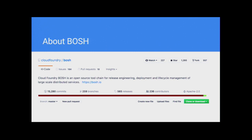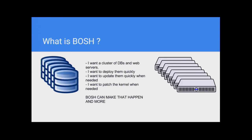There are 15,000 commits and counting on GitHub. Imagine the basic example: I have a cluster of databases and a cluster of web servers, and I want to deploy it on any IaaS. I want to recreate it anytime I want. If a kernel CVE comes in, I want to just run one command and it will recreate the VMs with the new kernel, without downtime, and with reproducibility — so whatever was there will still be there after recreating it. This is mostly what BOSH tries to address.